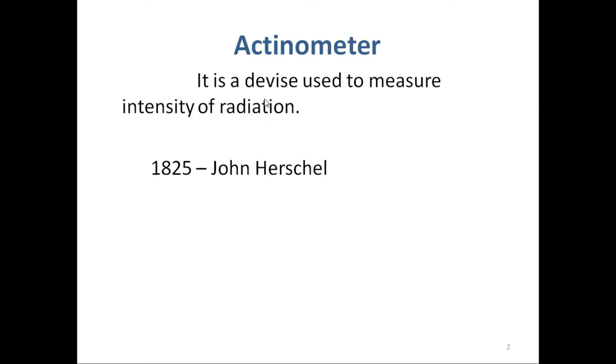An actinometer is a device commonly used to measure intensity of radiations. It determines the number of photons by measuring the rate of change of photo-induced response in a chemical system. The first actinometer was invented by John Herschel in 1825.